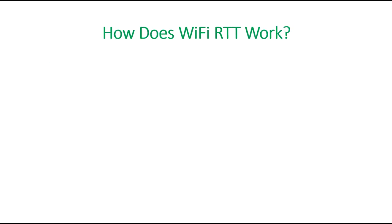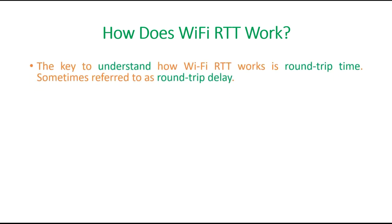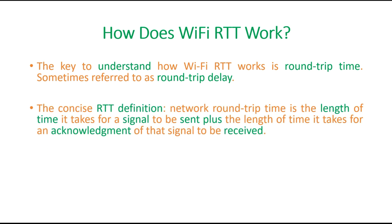How does Wi-Fi RTT work? The main key point is the round-trip time, in short RTT, also referred to as round-trip delay. RTT is the network round-trip time — the length of time it takes for a signal to be sent plus the length of time it takes for an acknowledgement to be received. One signal is sent from source to destination and the acknowledgement comes back, and the total time is the round-trip time.